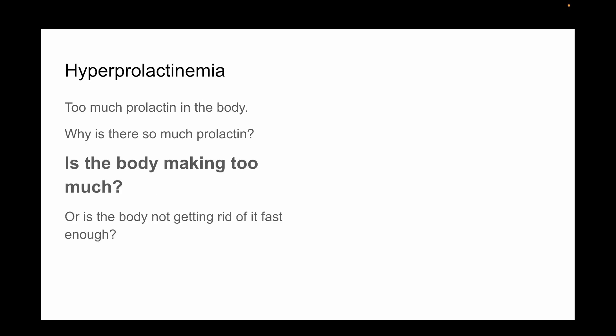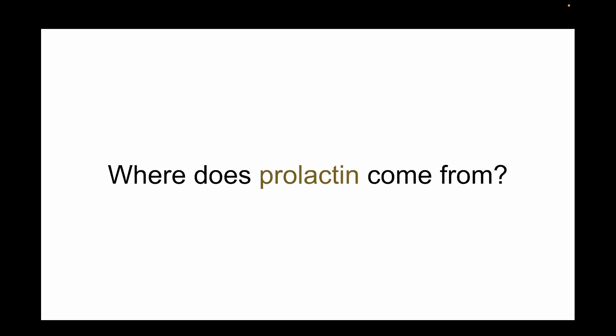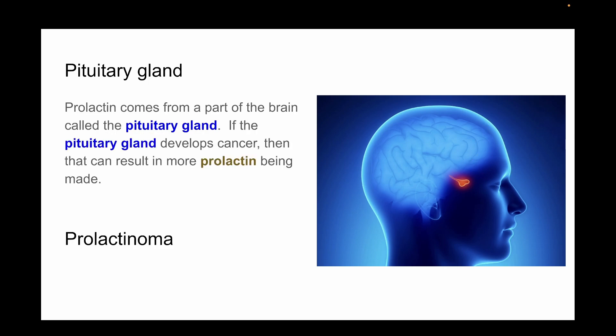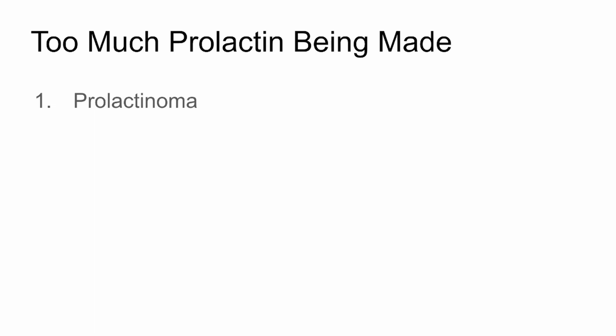We'll start with determining if the body is making too much. So where does the hormone prolactin come from? It comes from the body's pituitary gland, part of the brain. Whenever a part of the body becomes cancerous, it may produce more of its usual chemicals. In this case, cancer of the pituitary gland can result in much more prolactin being made. A tumor in the pituitary gland that produces prolactin is called a prolactinoma. Now we have our first reason.